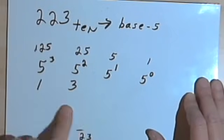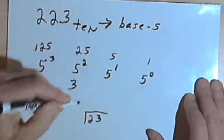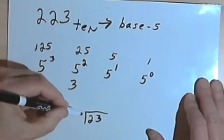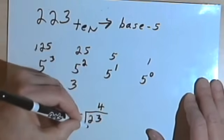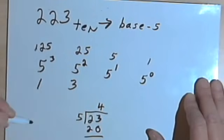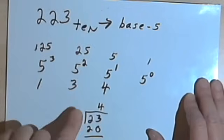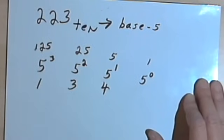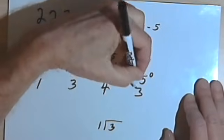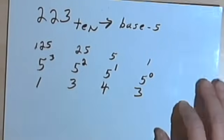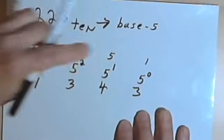I'm going to continue this way. My remainder was 23, so I'm going to take the 23 and find out how many times I can divide 5 into that. 5 goes into 23 four times, with a remainder of 3. So in my 5 to the 1st column I'll put a 4. Then I want to find out how many times 5 to the 0, or 1, divides into 3 — and of course that's 3. So my number in base 5 is going to be 1343 base 5.